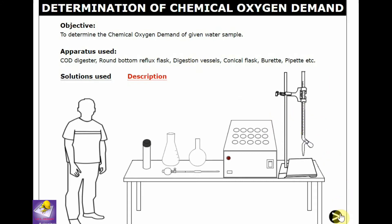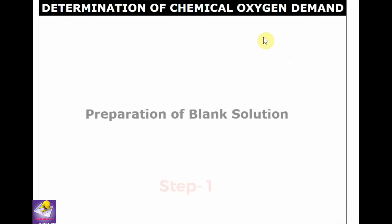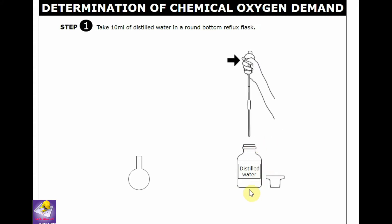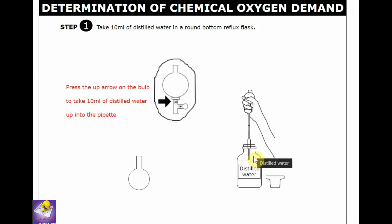Let's the test proceed. First part is the preparation of blank solution. Take about 10 ml of distilled water by pipette to the reflux flask.